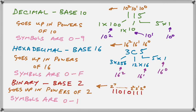And then we go to binary, and we have base 2. We can only have two symbols, 0 or 1, in any position. And our positions go up in powers of 2, as shown.